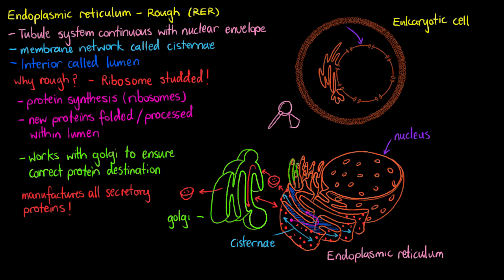And that's going to cover all of the basics of our rough endoplasmic reticulum. But quickly, before we finish, I'll just outline all of this endoplasmic reticulum toward the top here, and just note that this area isn't studded with ribosomes, and that's because it's part of the smooth endoplasmic reticulum. We'll talk about the smooth endoplasmic reticulum and its job in the next video.